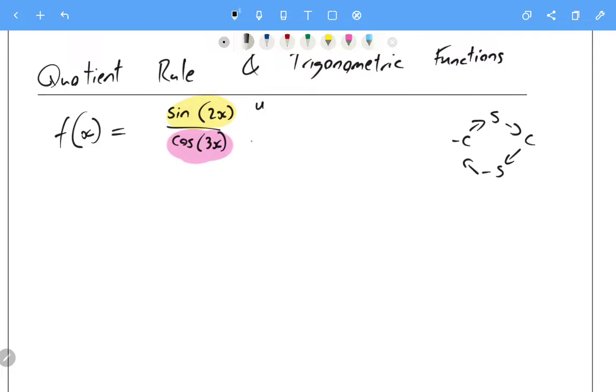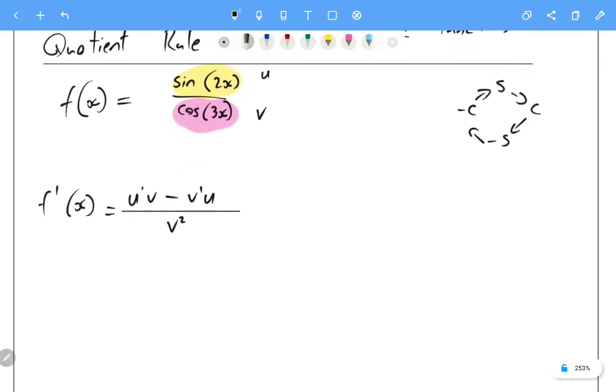So let's label the top as u, the bottom as v, and the quotient rule says well the derivative is just the derivative of the top u dash times v minus v dash u, the derivative of the bottom times the top all over the bottom squared, and now it's just a game.